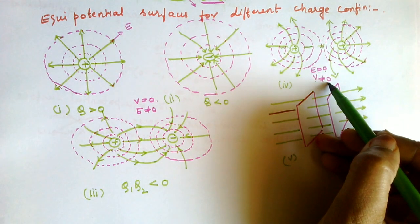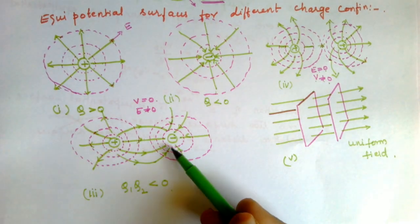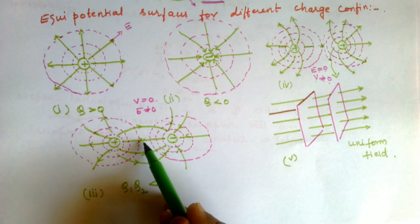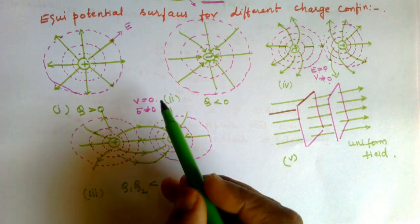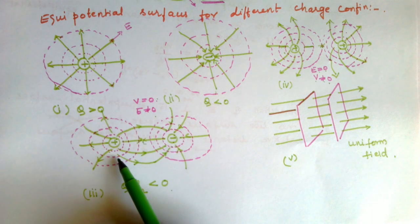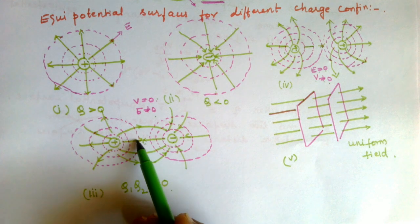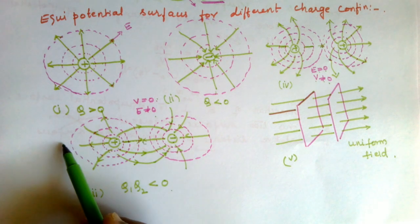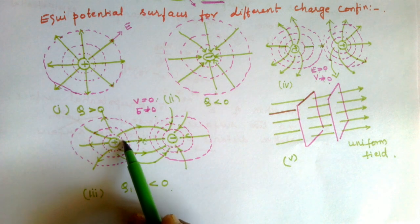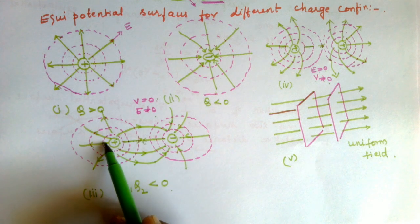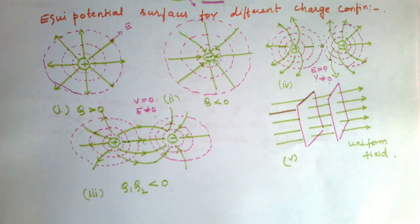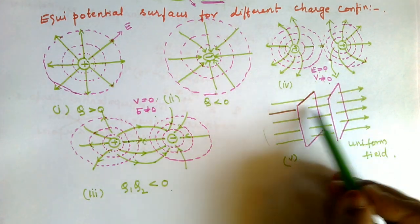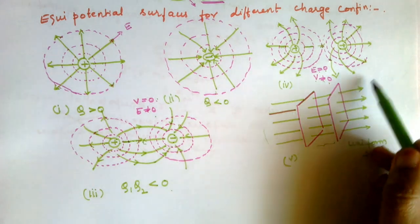For a dipole — one positive and one negative charge — there is a field directed from positive to negative, but the potential at the center of the dipole is zero. The field lines show gaps gradually increasing, but the rate of decrease differs on each side. Finally, for a uniform field, equipotential surfaces are parallel planes that are equidistant from each other, with equal gaps indicating constant field strength throughout.